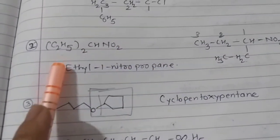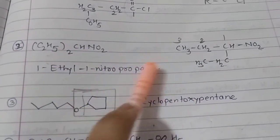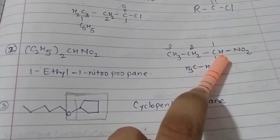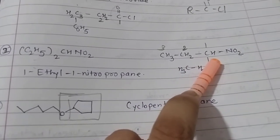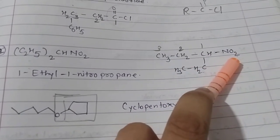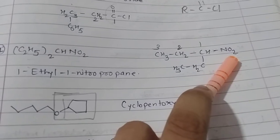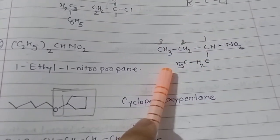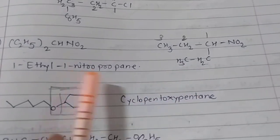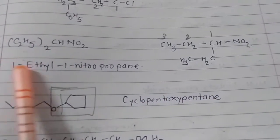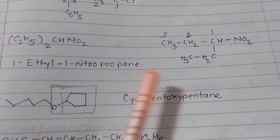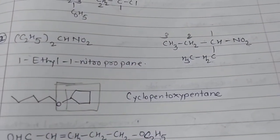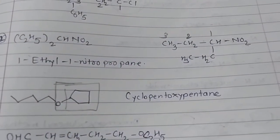The next example: C2H5 is written as CH2CH3. The major functional group is nitro, so numbering is done — one, two, three. The first position has both ethyl and nitro groups, so one-ethyl, one-nitro. There are three carbons in the longest chain, so propane. The name is 1-ethyl-1-nitropropane.